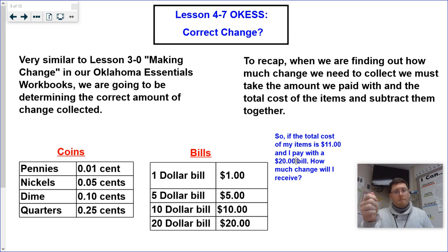And we need to subtract those two together to find out how much money we are getting back. If we're paying with money, I just want to go through this as a refresher. Pennies equals one cent, nickels equals five cents, dime equals 10 cents, quarters equals 25 cents.